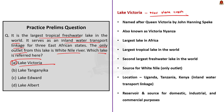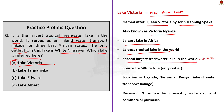Lake Victoria was named after Queen Victoria of England by European explorer John Hanning Speke. It is also known as Victoria Nyanza. It is one of the African Great Lakes, the continent's largest lake, the largest tropical lake in the world, and the second largest freshwater lake in the world by surface area. It is the source of the White Nile — the only outlet from Lake Victoria. The lake lies mainly in Tanzania and Uganda, but also borders Kenya, serving as an inland water transport linkage for these three East African states.